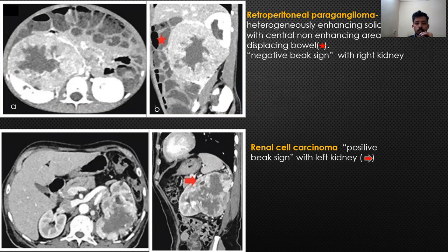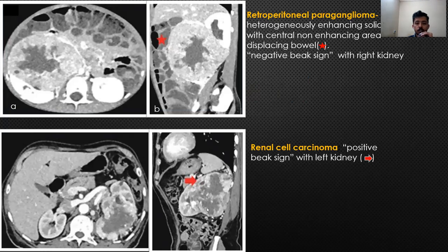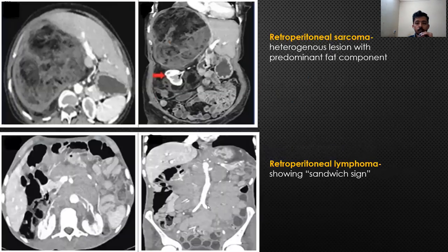The next case showed a large heterogeneous lesion arising from the left kidney with a positive beak sign, suggestive that it is of renal origin. It is pathologically proven to be a case of renal cell carcinoma.